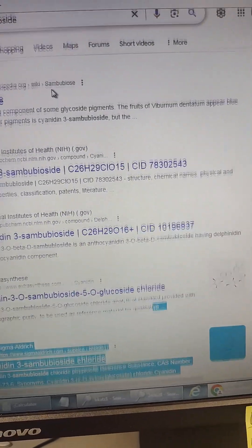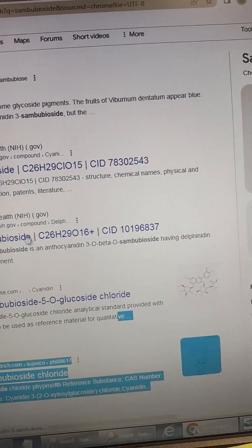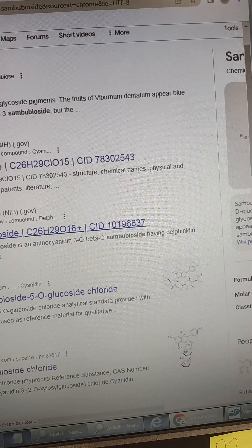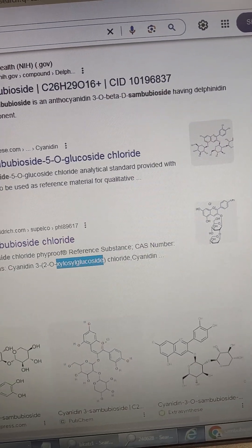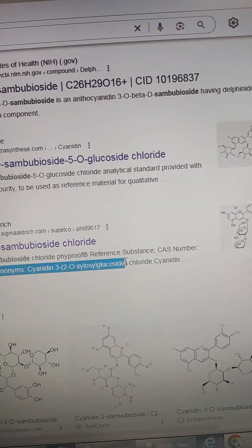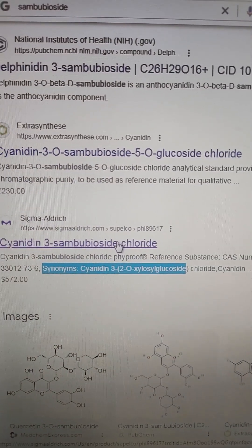Sambubioside, if you search that is, right? You can look on here. That is the xylo. So the synonym, that's the xyloglucoside. So it's just the sugar acid. The sugar conjugates have all sorts of different names.